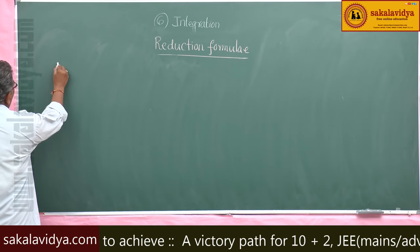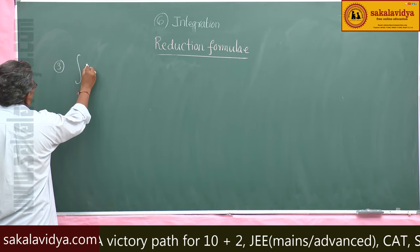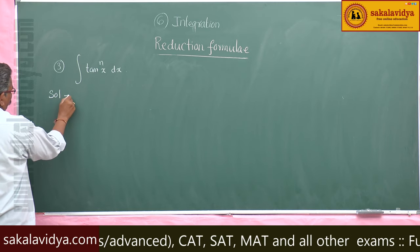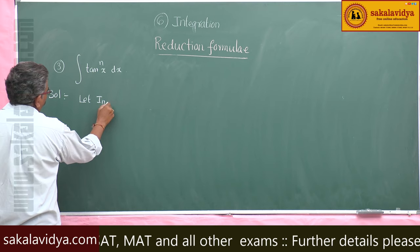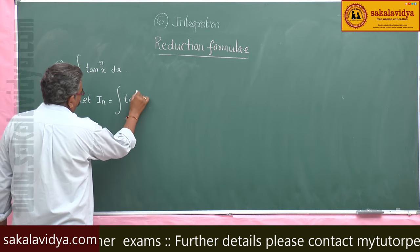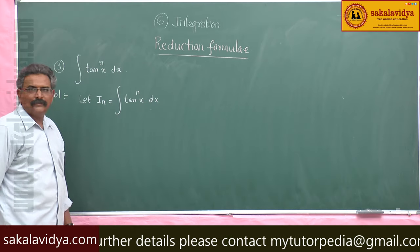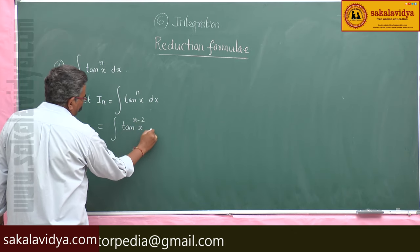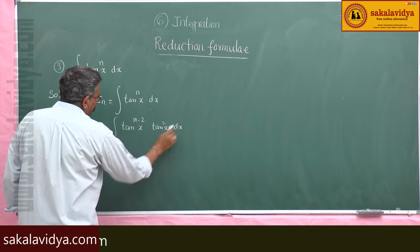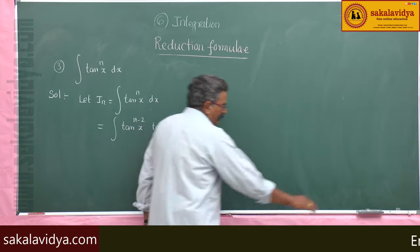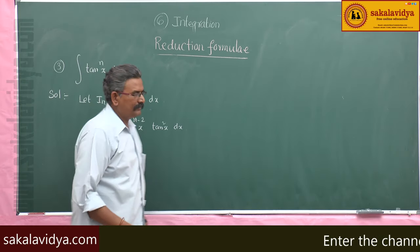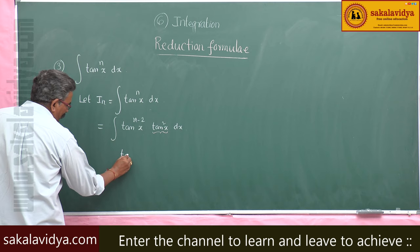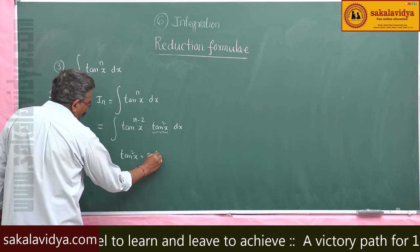Next reduction formula: integral of tan x to the power of n dx. Let I_n equal the integral of tan x to the power of n dx. This can be written as the integral of tan x to the power of n minus 2 into tan squared x dx. Now, tan squared x can be written as secant squared x minus 1.